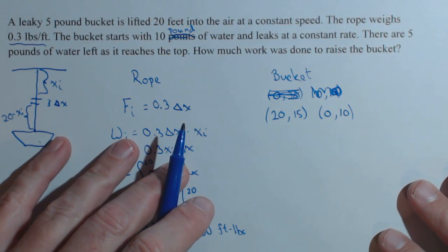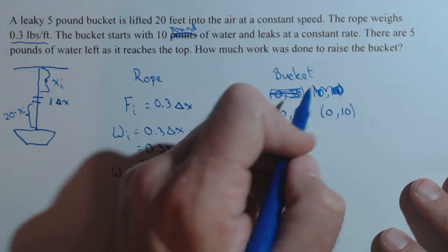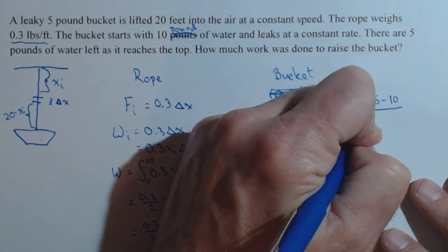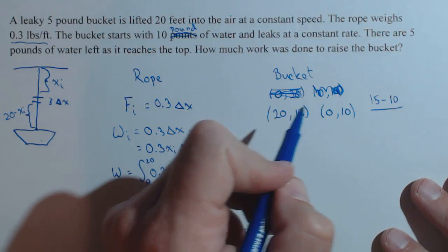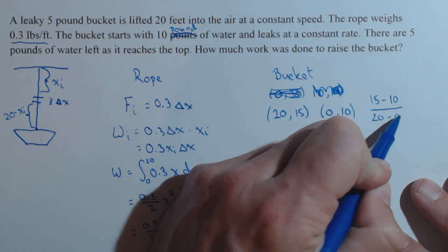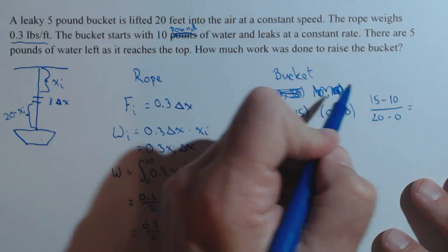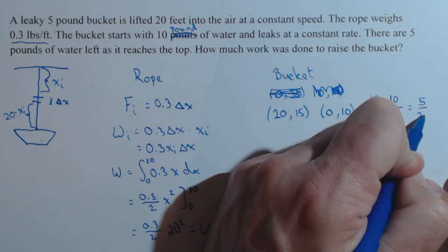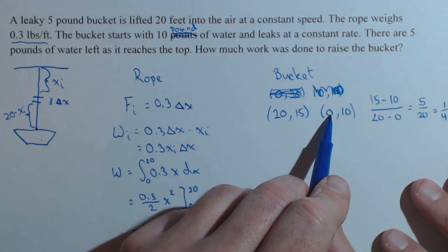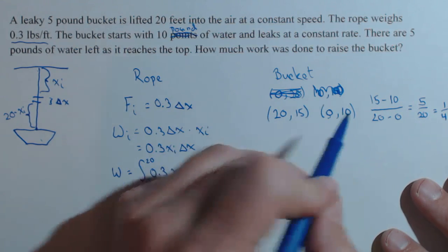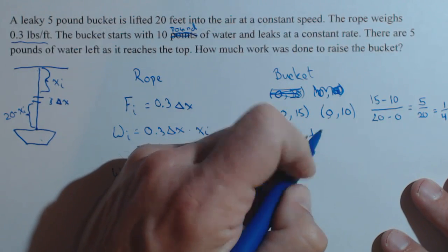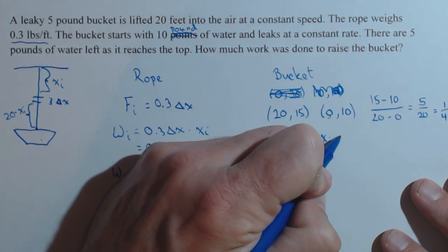So what we're going to do is create a linear relationship with these two points. So we're going to look at change in y, so 15 minus 10 over change in x. So we have 20 minus 0, and we've got 5 over 20, or 1 fourth. And we already have the intercept here, which is 10. So the force on the ith slice is 1 fourth x sub i plus 10.